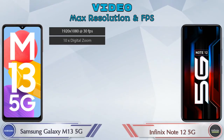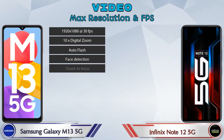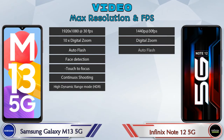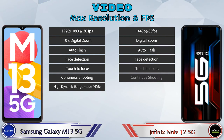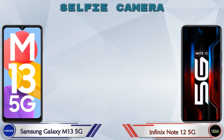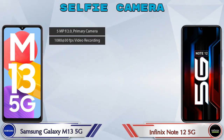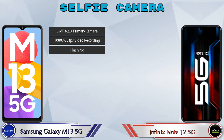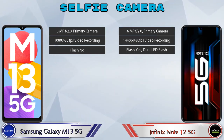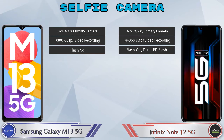For video camera, both phones have 7 different types of features available. For the front selfie camera, both phones have a single camera with 3 different features available.